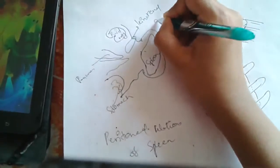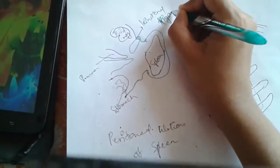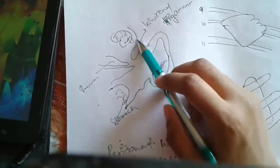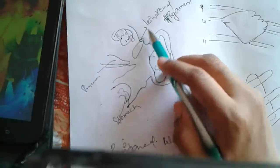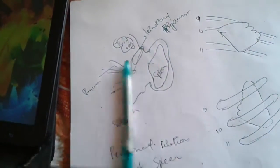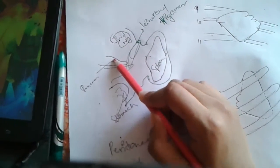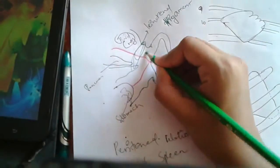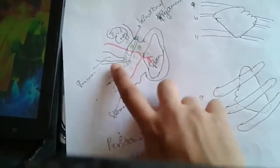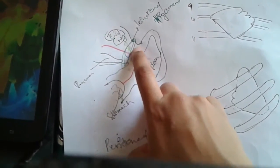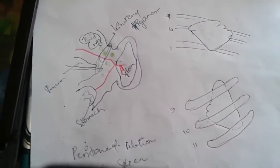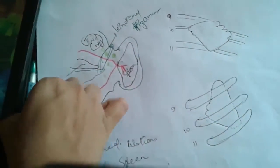Where the peritoneum continues from the spleen to the kidney, it forms the lieorenal ligament. 'Lieno' means spleen and 'renal' means kidney, so this lieorenal ligament extends from the spleen to the anterior surface of the left kidney. The lieorenal ligament contains the tail of the pancreas, splenic vessels, and splenic or pancreatic lymph nodes.